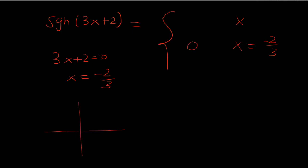Now, we know that this is a positive slope. It looks something like that. So to the right of negative 2 thirds, it's going to be positive, so we're going to put 1. And to the left of negative 2 thirds, it's going to be negative, so we'll put negative 1. So that's what it's defined as.